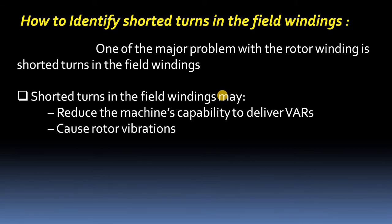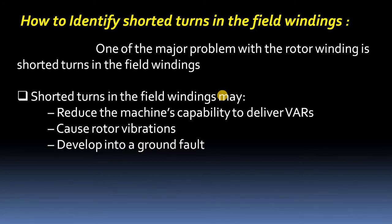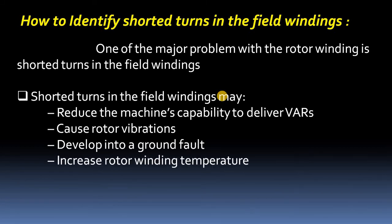Whenever shorted turns are present there is an unbalance in the air gap flux density, and that unbalanced air gap flux generates rotor vibrations. Additionally, shorted turns in the field winding can develop into a ground fault.